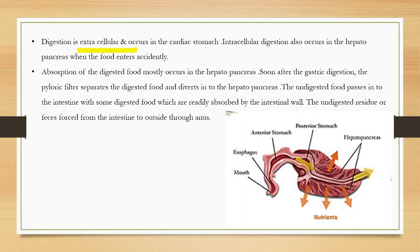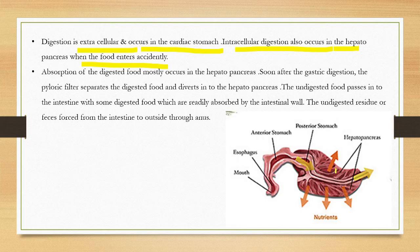Digestion is extracellular and occurs in the alimentary canal, specifically in the cardiac stomach. Intracellular digestion also occurs in the hepatopancreas when food particles enter the hepatopancreatic cells. Absorption of digested food occurs in the hepatopancreas. After gastric digestion, the pyloric filter separates digested food and directs it into the hepatopancreas.